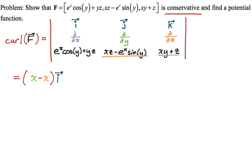It's going to be minus — people forget this part — so it's minus the quantity. I'm crossing out the top row and the middle column. I need the derivative with respect to x of this term, which is just y, and then minus the derivative with respect to z of this term. There's no z in the first term, and yz — the derivative with respect to z is just y. That means I got zero for my j component as well.